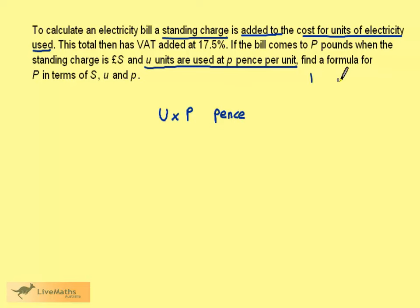Just thinking about this, if it's p pence per unit, one unit would cost us p pence. Two units would cost twice p. Three units would cost three times p. So for U units, it's U times p.